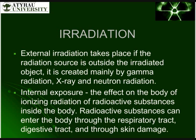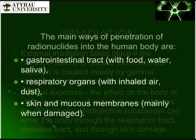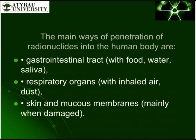Internal irradiation occurs when the radiation source is inside the irradiated object. The main pathways of penetration of radionuclides into the human body are: the gastrointestinal tract — with food, water, and saliva; the respiratory organs — through inhalation and dust; and the skin and mucous membranes, mainly when damaged.